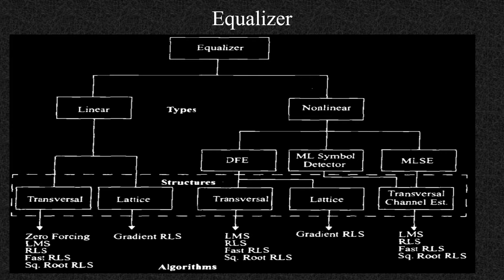In the ML symbol detector and maximum likelihood symbol estimator, you have a transversal channel estimator. The algorithms used to implement these structures include: zero forcing, LMS, RLS, fast RLS, and square root RLS. For the lattice structure, gradient RLS is used. For the transversal DFE structure, the same algorithms apply — LMS, RLS, fast RLS, square root RLS — just zero forcing is not there.